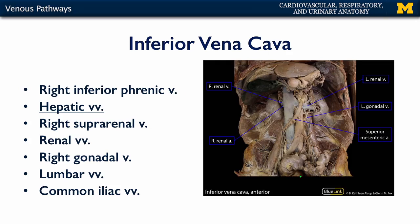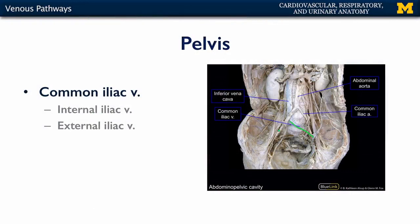Here we can see the cadaveric view of the vessels. Here is the inferior vena cava, and there are the renal veins. Here is the left suprarenal vein, the left renal, and the left gonadal vein. Obscured from view are the common iliac veins, which form from the nexus of the internal iliac veins — draining the pelvic viscera, external genitalia, and perineum — and the external iliac veins, which drain the lower limbs. These veins come together to form the common iliacs, which unite to form the inferior vena cava.